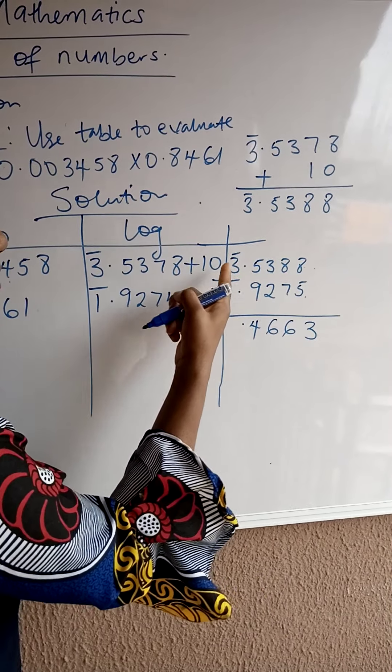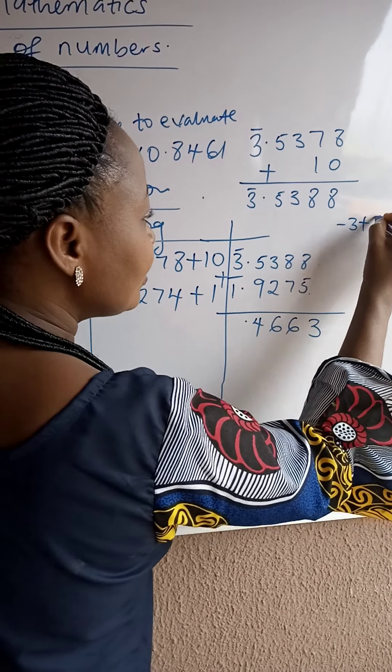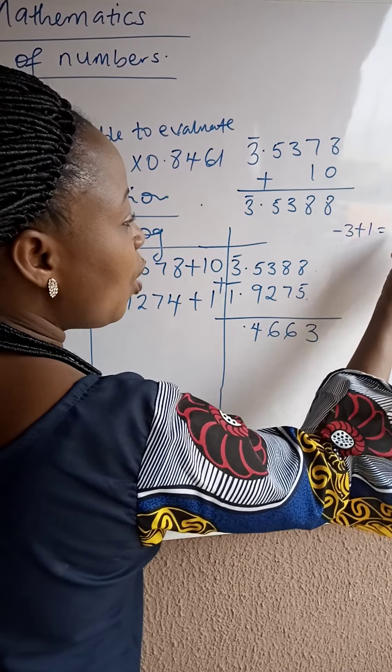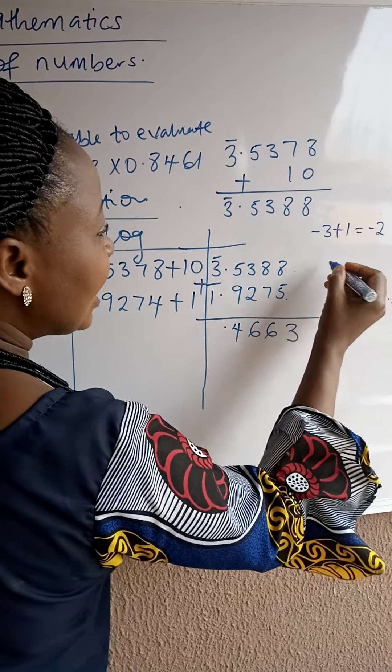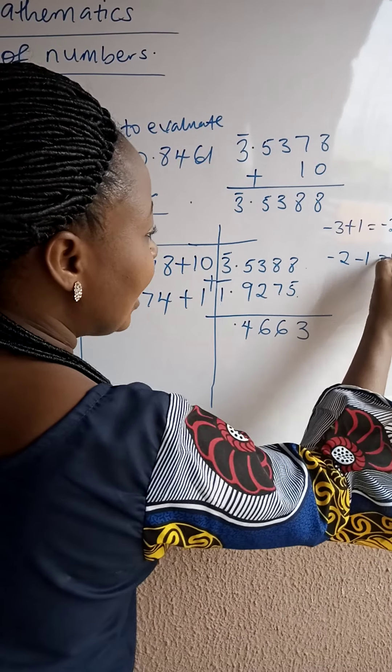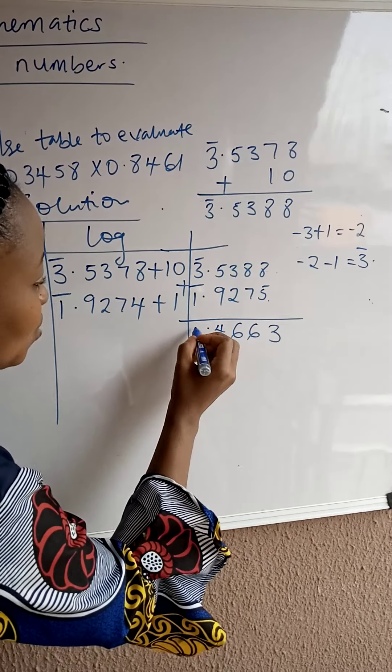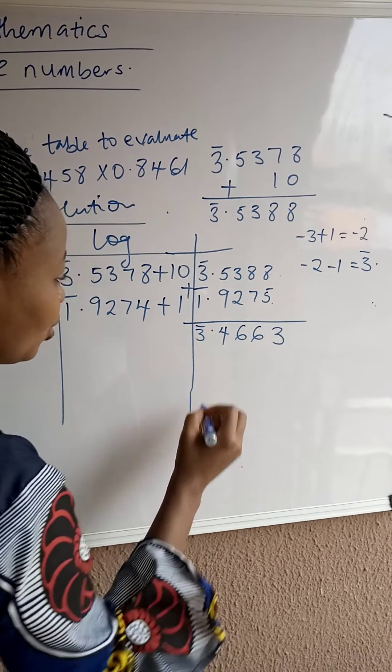Here, I told you this bar 3 means minus. So, it's going to be minus 3 plus 1. Minus 3 plus 1 will be equals to minus 2. Then, minus 2. We are having minus 1 here to minus 1. That is going to be bar 3. That is minus 3. So, this one will automatically give us bar 3.